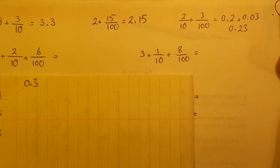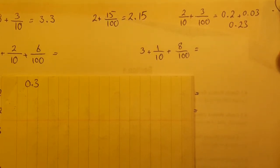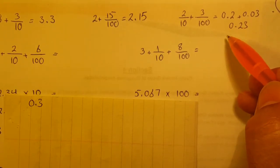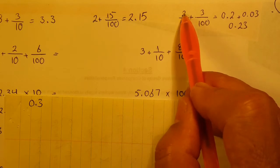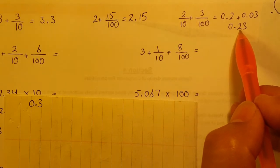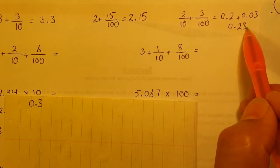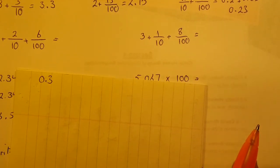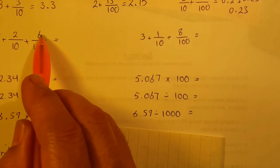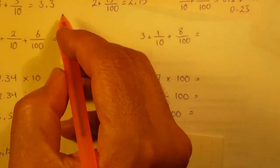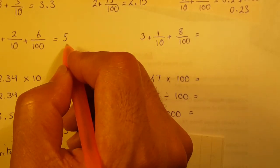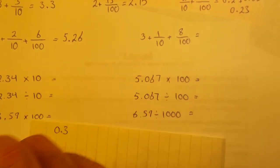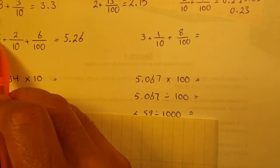The adding of decimals I'll explain in another session, so I'm not focusing on that here. Just to show: 2 over 10 is this, 3 over 100 is this, so the answer is 0.23. Now, 5 plus 2 over 10 plus 6 over 100 — the answer shown as a decimal is 5.26.